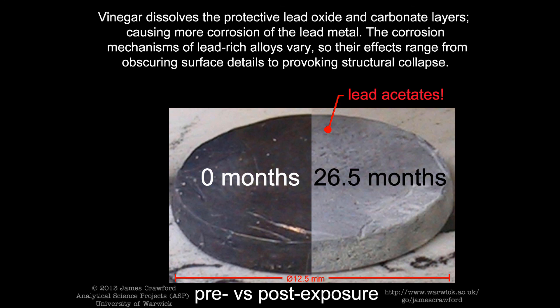Vinegar dissolves the protective lead oxide and carbonate layers, causing more corrosion of the lead metal. The corrosion mechanisms of lead-rich alloys vary, so their effects range from obscuring surface details to provoking structural collapse.